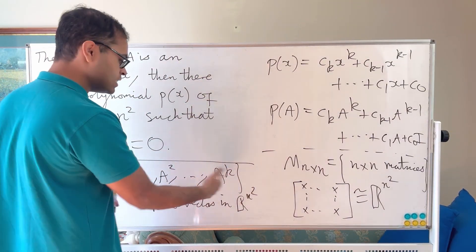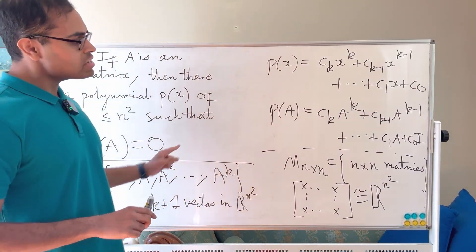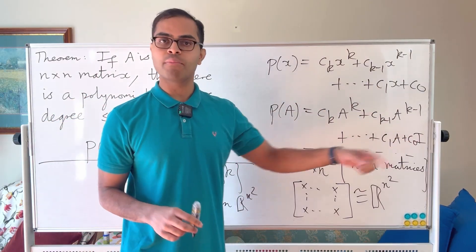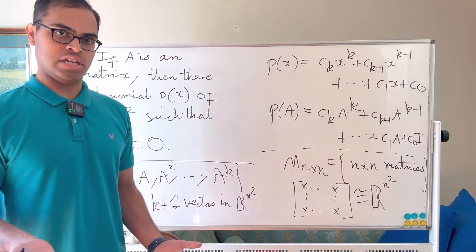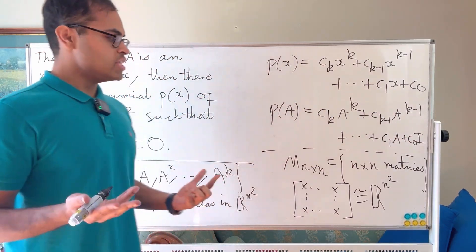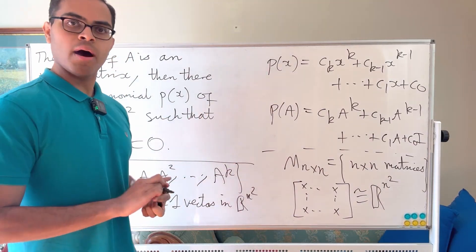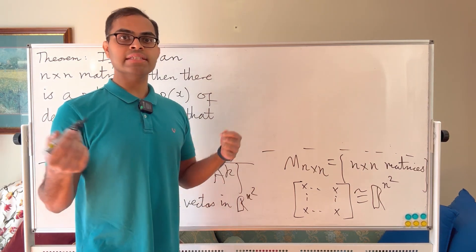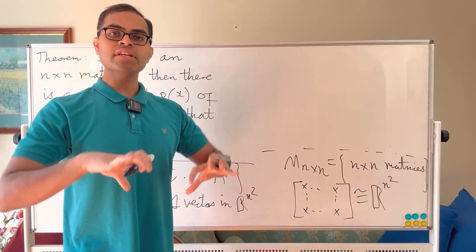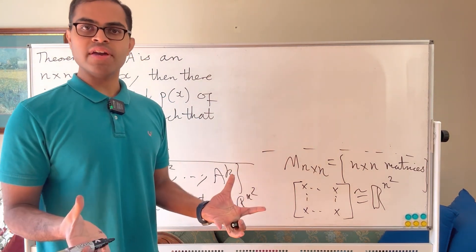But here we've got k plus 1 vectors in R^{n²}, and we're asking is there a relation between them, what is called a linear dependence relation between them. So if you think about it, and this is a principle in linear algebra, I'm going to write it up top, the principle is that if you have more vectors than the dimension, you can always find a relationship between the vectors.